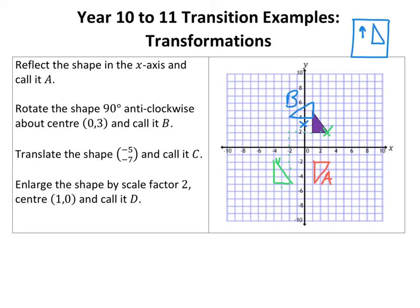Every point has moved that far, so translation essentially I've got the same shape but just in a different place. That's shape C. Now then, last one. Enlarge the shape by scale factor two, center (1,0), call it D. So (1,0) is here.